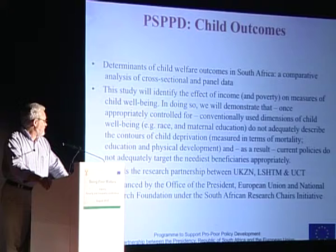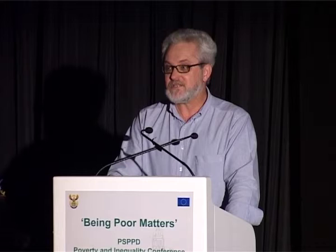We are looking at conventionally used dimensions of child well-being such as mortality, education, and physical development. Our concern is that some of the confounders — the things we conventionally analyze when thinking about differences in child outcomes, such as race, mortality, and maternal education — are not going to be adequate in understanding why we have such inequalities.